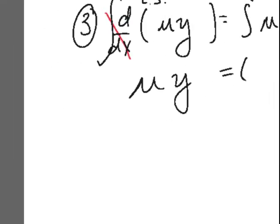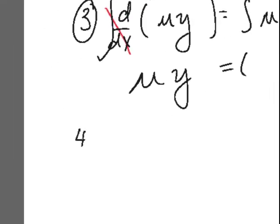So at that point, you then divide both sides by the mu, because you're looking for what y equals, not what mu times y equals.